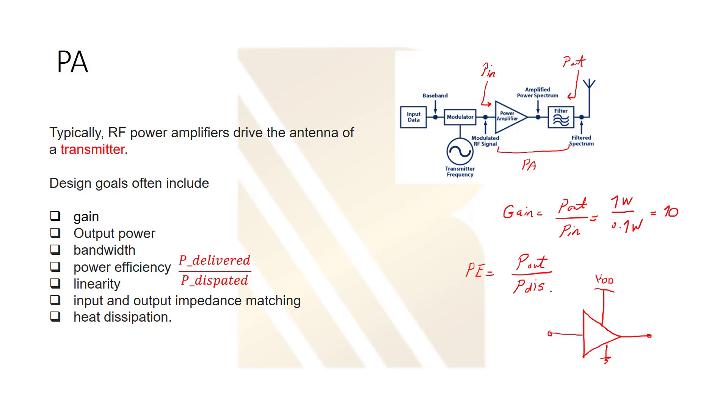So, power dissipation is the power consumed by our amplifier. We know that our amplifier gets current from our power source. So, we say this is ID, for example. We can say, yeah, power dissipation is more or less equal to VDD times ID. So, actually, this is the power that is dissipated inside the power amplifier.